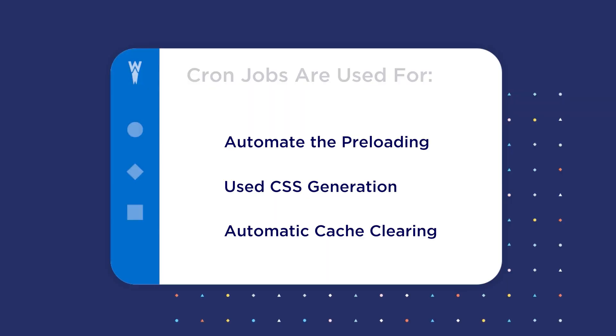Cron is extremely important for WP Rocket because we use it to automate the preloading of cache, the used CSS generation, automatic cache clearing, and other tasks. That is why we highly recommend setting up a cron job on the server to effectively run the WP-Cron calls.